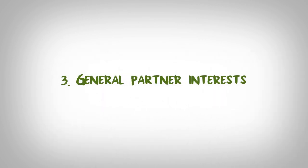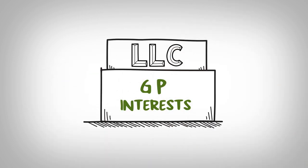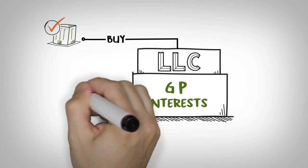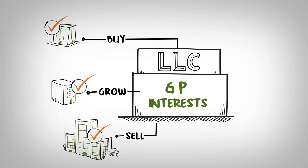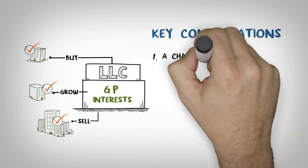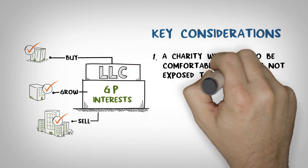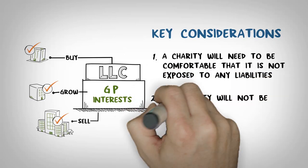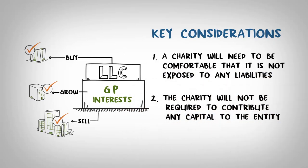Another interest for possible contribution is the general partner interest. The GP is often formed as an LLC. This entity decides which companies to buy, how to grow value, and when to sell these portfolio investments. For this to work, this entity is compensated through a management fee and carried interest — participation in profits that may result from their efforts. Giving this LLC interest can effectively allow the individual to transfer their carried interest from the appreciation generated from all of the investments.